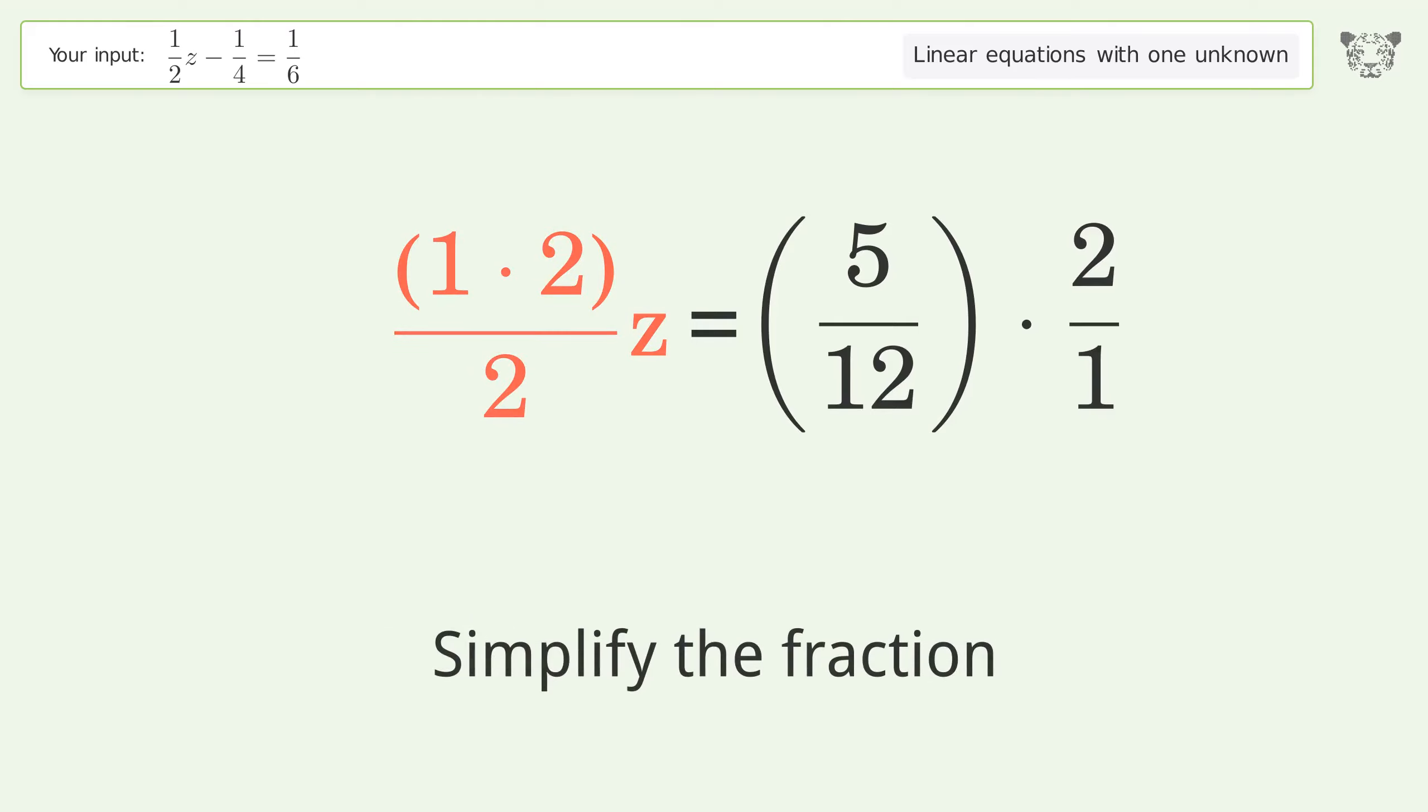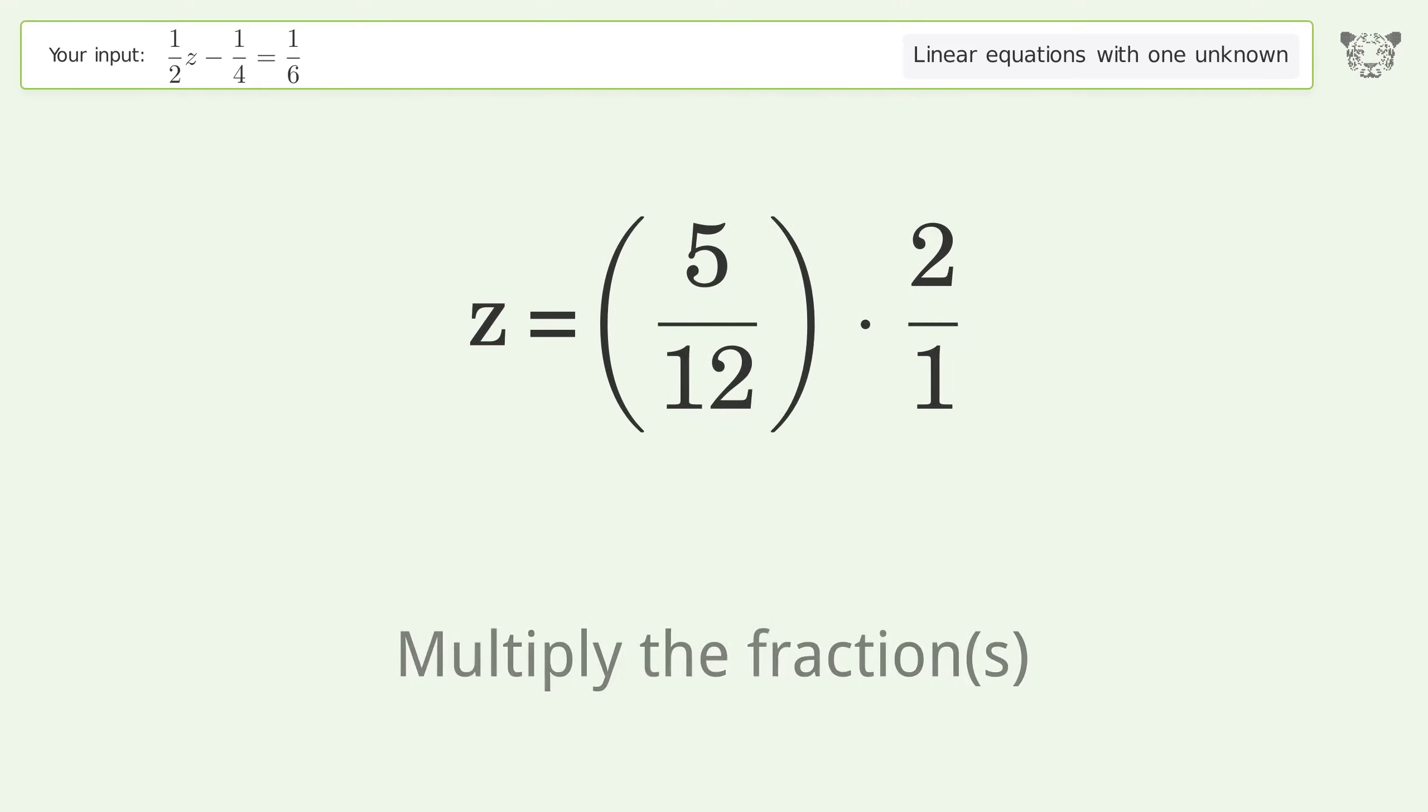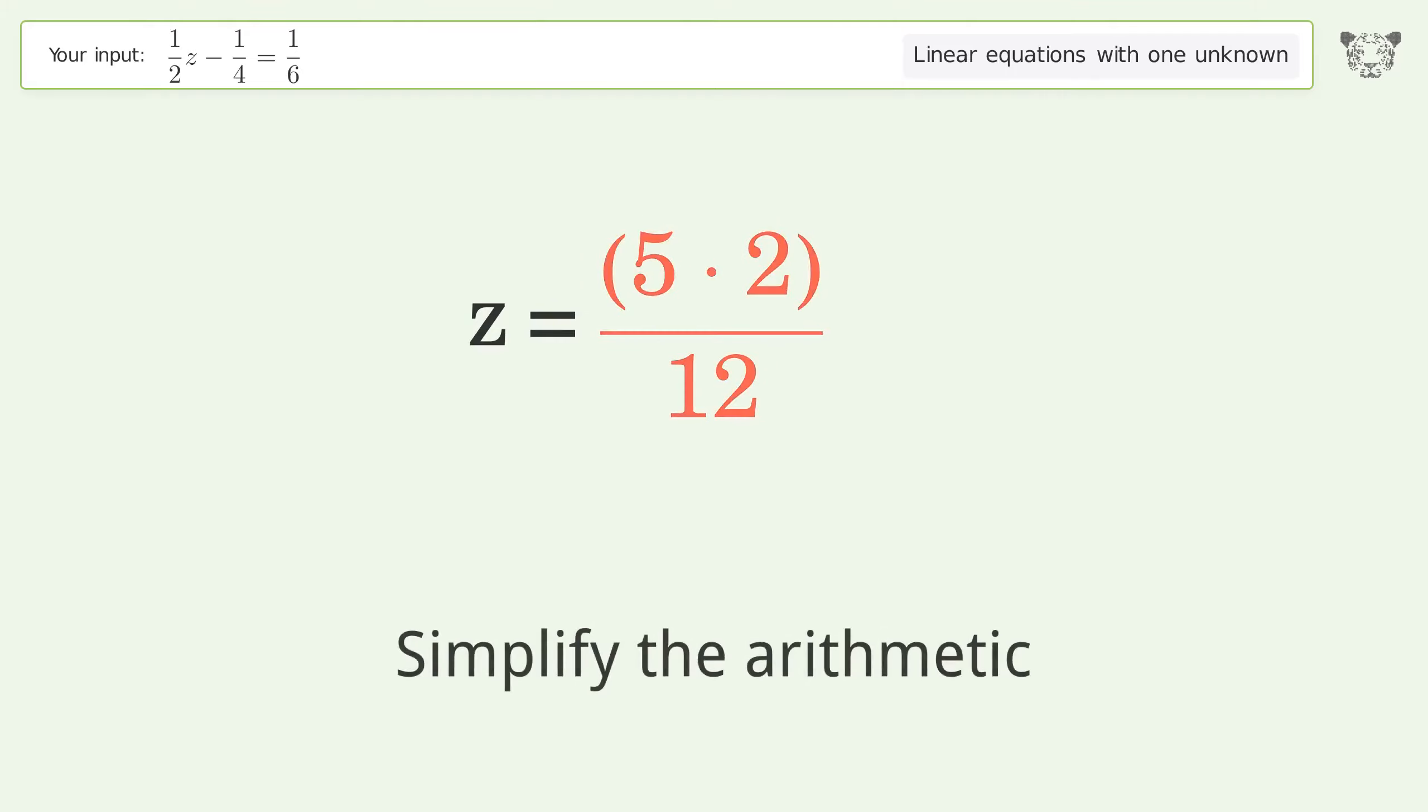Simplify the fraction. Multiply the fractions, simplify the arithmetic. And so the final result is z equals 5 over 6. Families, I'll see you soon.